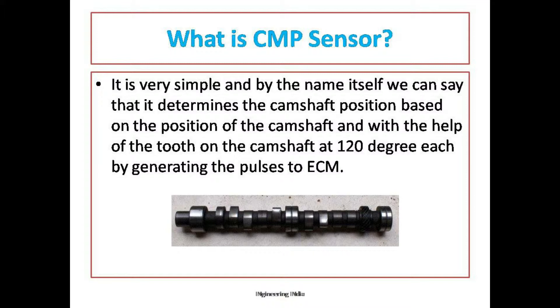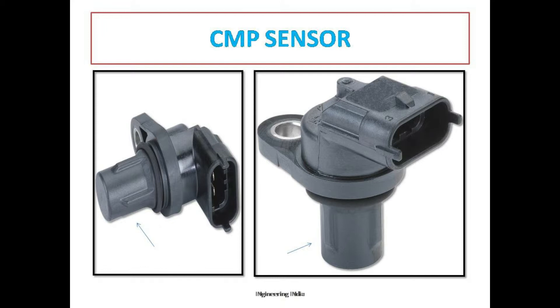CMP means camshaft position sensor — C for camshaft, P for position. This sensor is used to determine the position of the camshaft. With the help of teeth situated on the camshaft at 120 degrees each, there will be three teeth — 3 times 120 equals 360 — which are used to generate a pulse when they cross the sensor. When the sensor crosses the teeth and the wheel, it generates a voltage signal, and based on that voltage signal the work is done.